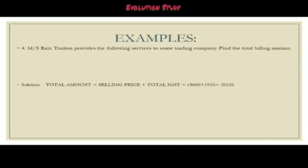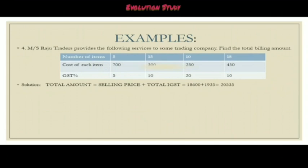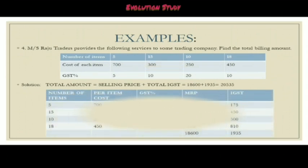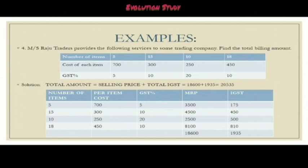Example four says MS Raju Traders provides the following services to some trading company — find the total billing amount. The number of items are five and the cost of each item and its GST is given. The solution: selling price plus total IGST, by solving which the answer comes as 18600 plus 1935, which is rupees 20535.